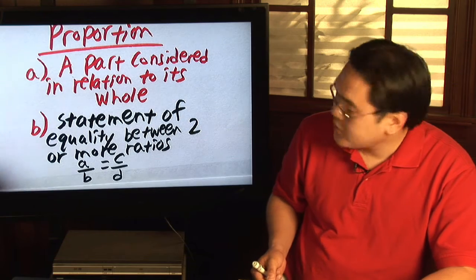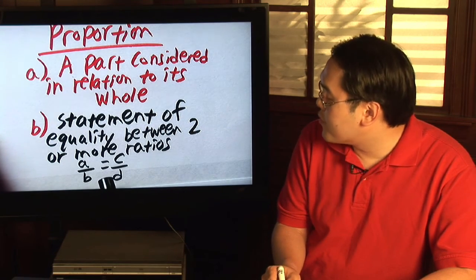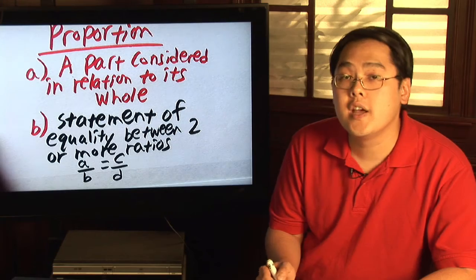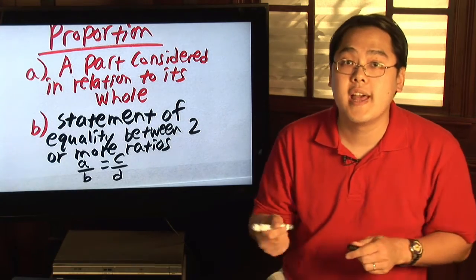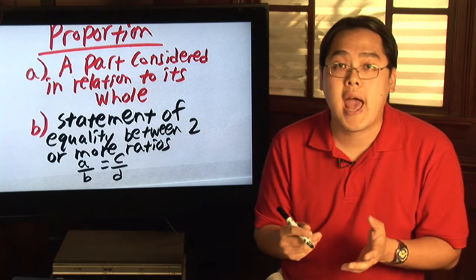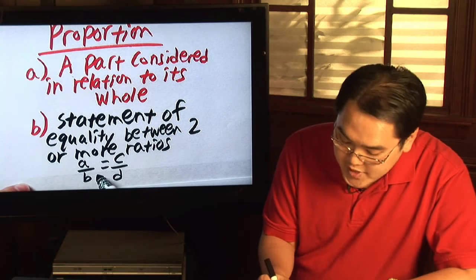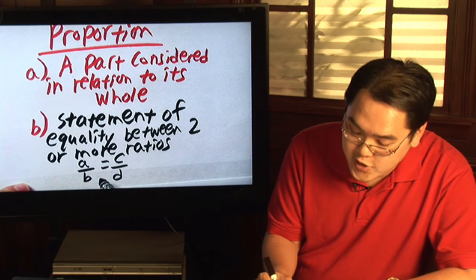For example, in order for a over b equal to c over d, for them to be in proportion with each other, the cross multiplication has to be the same. So for these two fractions to be equal,